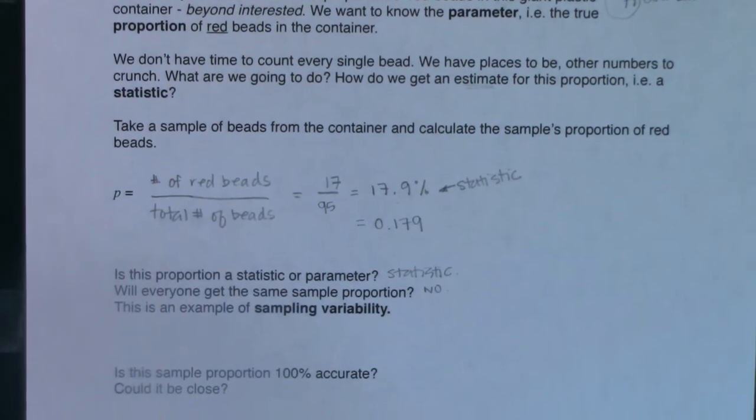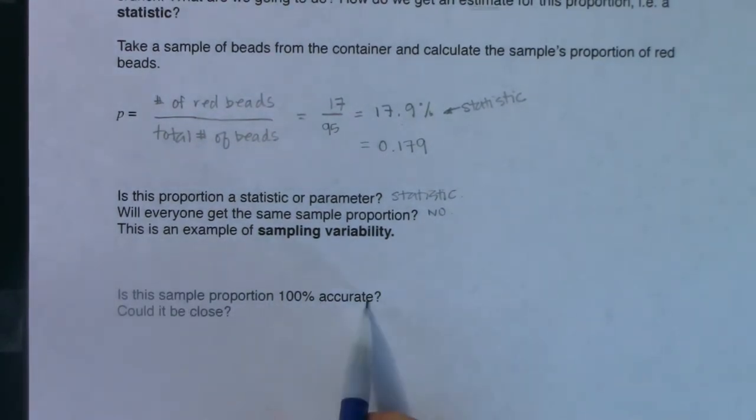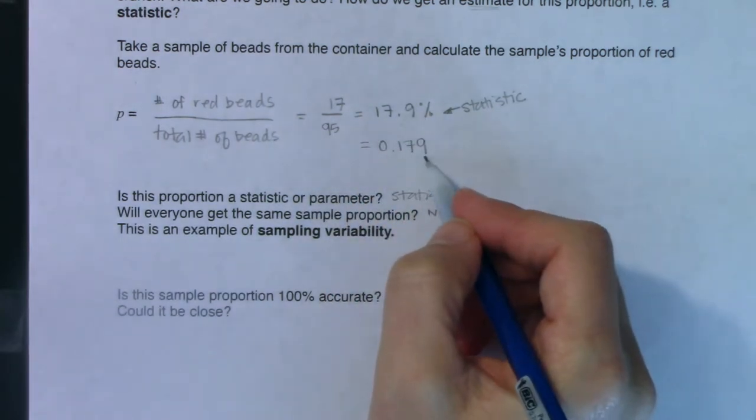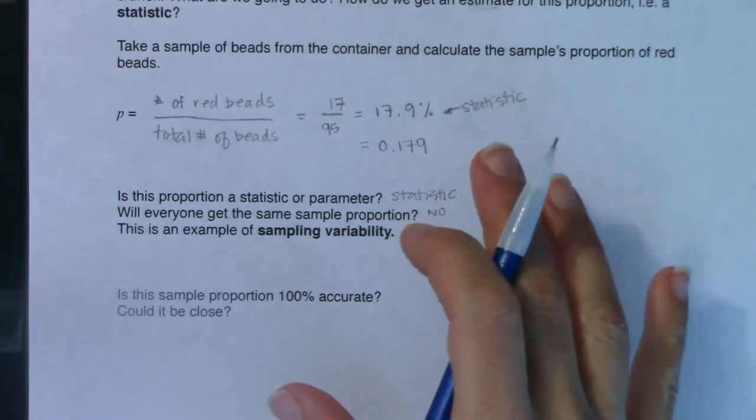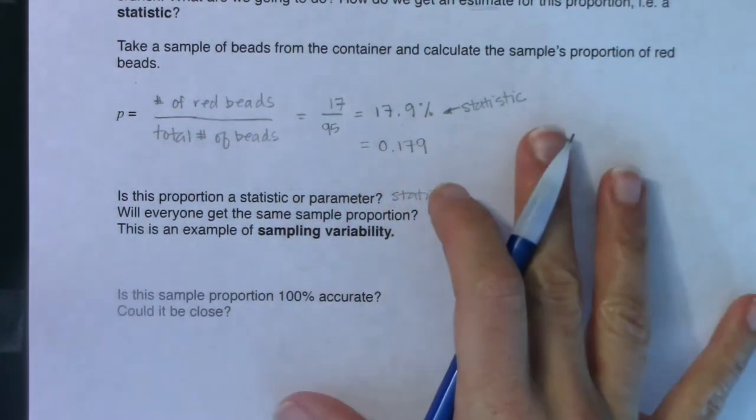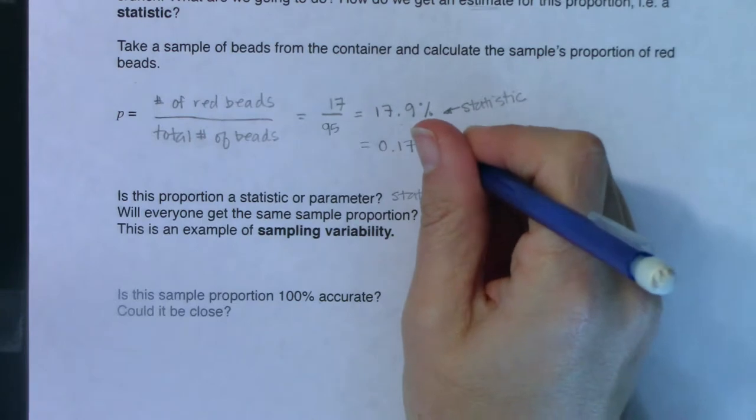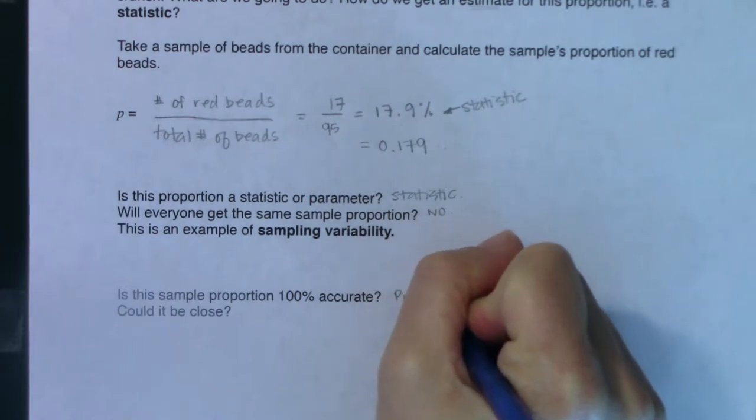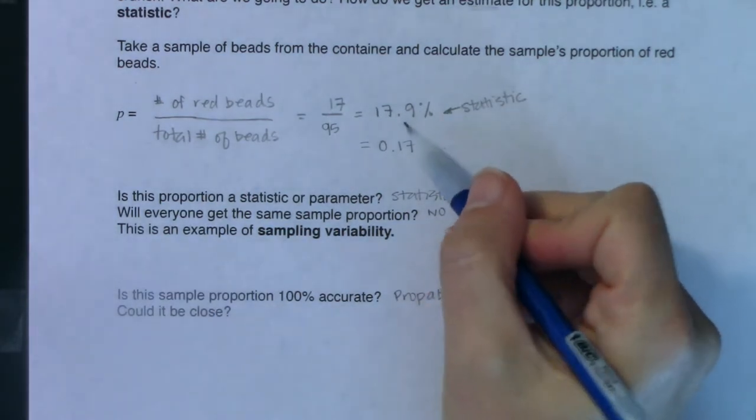Now, the next set of questions say, is this sample proportion 100% accurate? And what I'm asking here is this was based off of our little Dixie cup. Imagine you did have enough time and money to count every single red bead in that giant container against every bead in that container. Make that parameter, that ratio. Do you think that ratio, if you counted all of the beads would be exactly 17.9%? And the answer here is probably not. Could it be close? Sure.